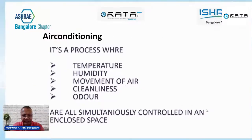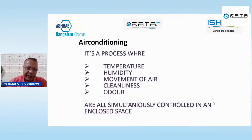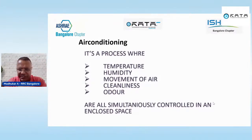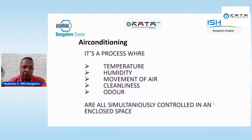Air conditioning is a process where temperature, humidity, movement of air, cleanliness, and odor are all simultaneously controlled in an enclosed space. The main purpose of air conditioning requires all five of these to be controlled simultaneously. A lot of people talk only about temperature and humidity, but movement of air is the most important part of comfort air conditioning, and the quantity of air defines this movement of air.